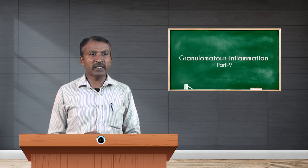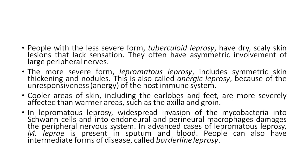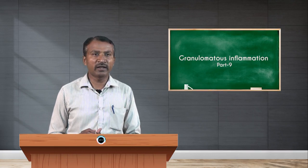In lepromatous leprosy, widespread invasion of mycobacteria into endoneural and perineural macrophages damages the peripheral nervous system. In advanced cases, Mycobacterium leprae is present in sputum and blood. People can also have an intermediate form of disease called borderline leprosy.